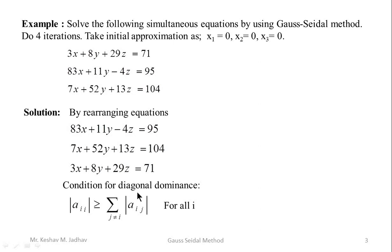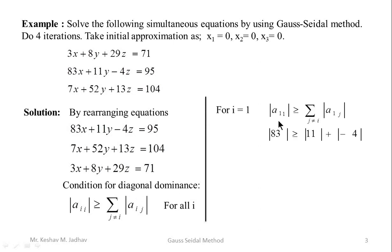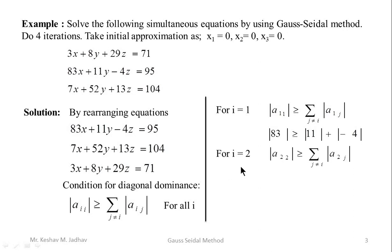Now checking diagonal dominance on the rearranged equations: for i = 1, a11 is 83, and 83 should be ≥ the sum of 11 and |−4| = 15. Since 83 > 15, this condition is satisfied. For i = 2, a22 is 52, and 52 should be ≥ the sum of 7 and 13 = 20. Since 52 > 20, this condition is also satisfied.